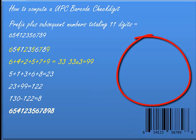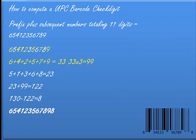In this example, I have the odd-position digits — the first, third, fifth, seventh, and so on — highlighted in yellow. We pull those out: 6 plus 4 plus 2 plus 5 plus 7 plus 9 equals 33. Then you take that group and multiply it by 3. 33 times 3 is 99.